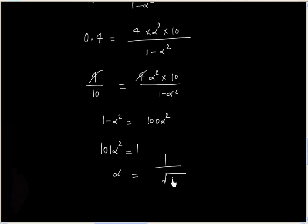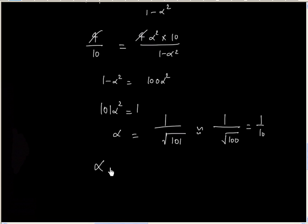Alpha is around 1 divided by 101. Alpha is approximately equal to 0.1.